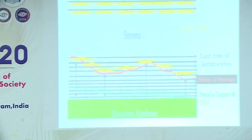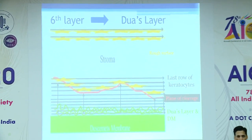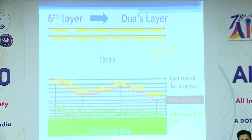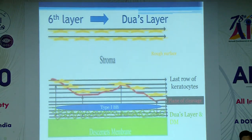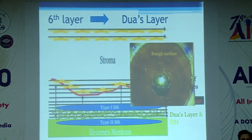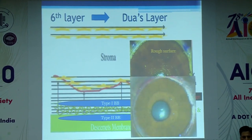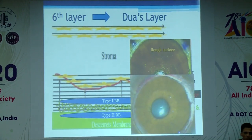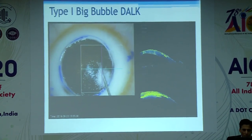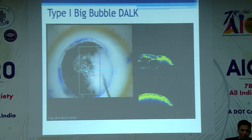Thank you Rajesh for making me a part of this course — there are no financial interests, although the intraoperative OCT microscopes are very expensive. I'll go straight to the videos. If you have a bubble above Dua's layer and Descemet's membrane, it is a type 1 bubble and the surface will look a little rough. If the air bubble is below Dua's layer, it's a type 2 bubble and the surface will look smooth.